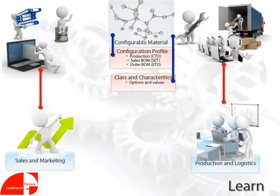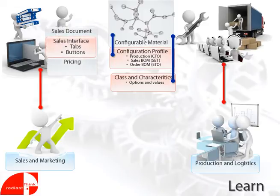We can organize our options or characteristics into tabs and buttons in the sales order. This provides a logical way for the salesperson to select the product options they need and to speed up the order process.